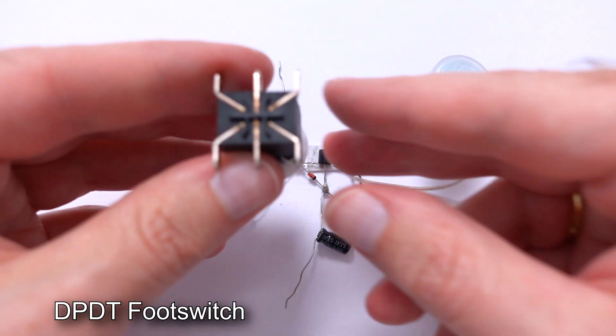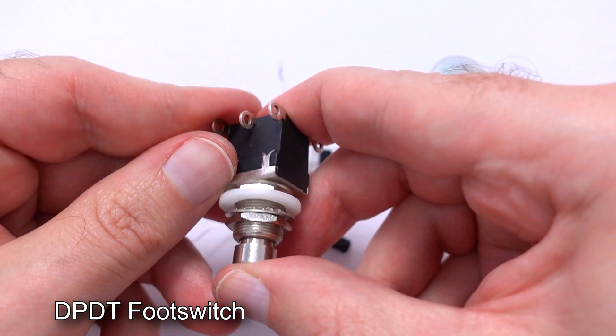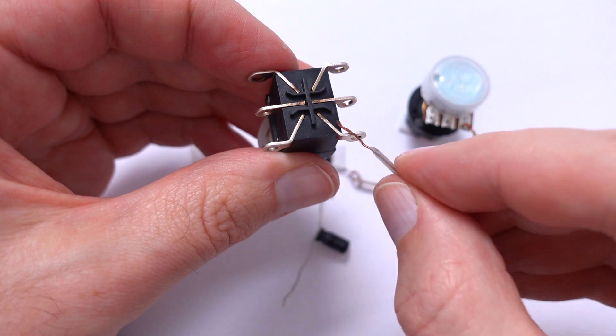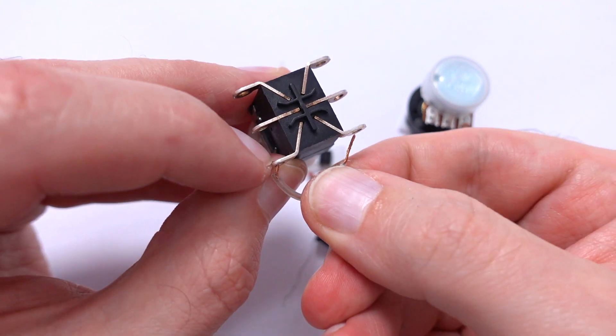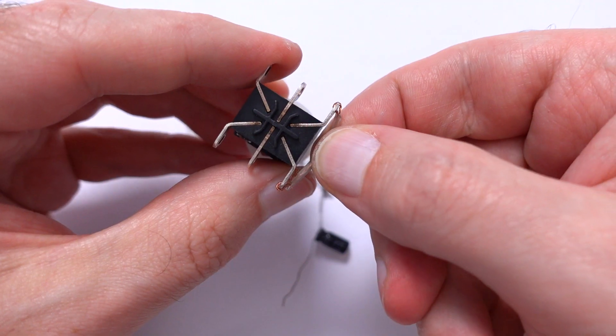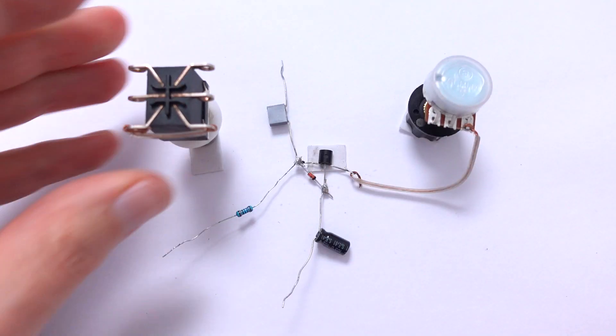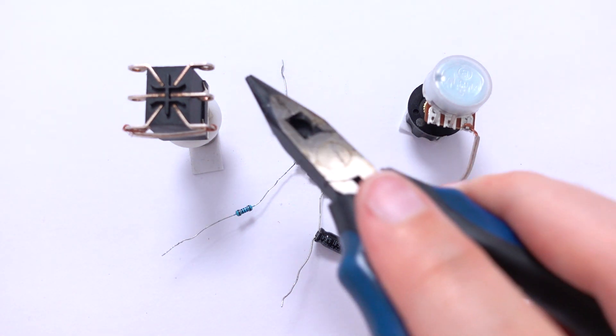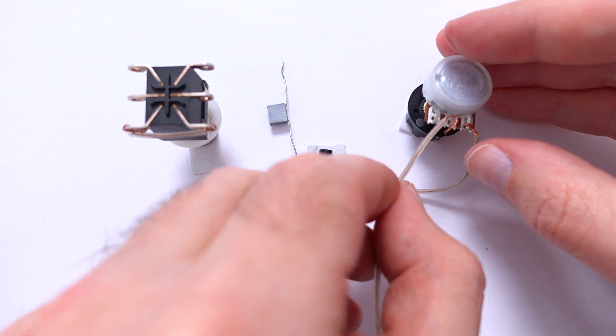Next step, DPDT foot switch pushbutton. And it has six pins. First of all connecting two lower pins. Now we need to connect the left and the middle terminals of potentiometer to the upper right pin of the foot switch.